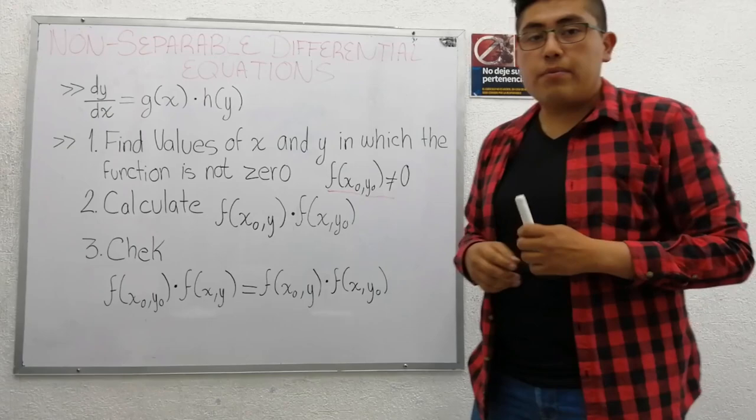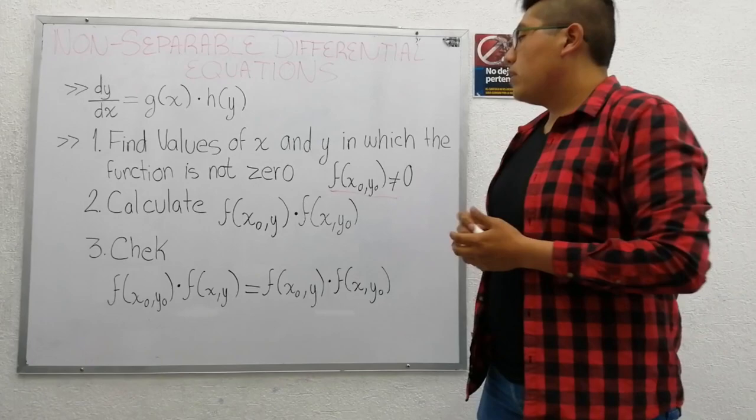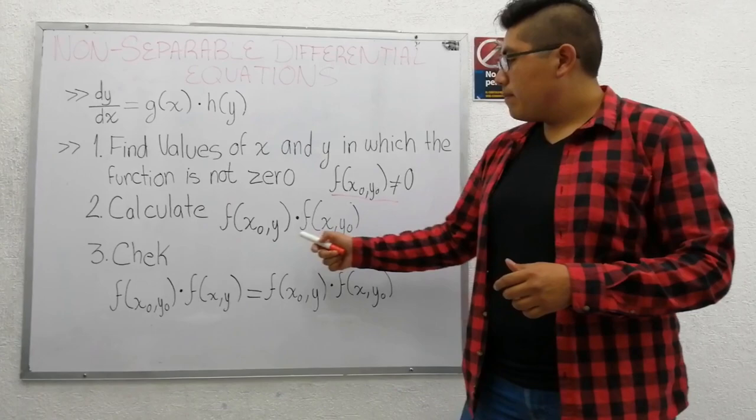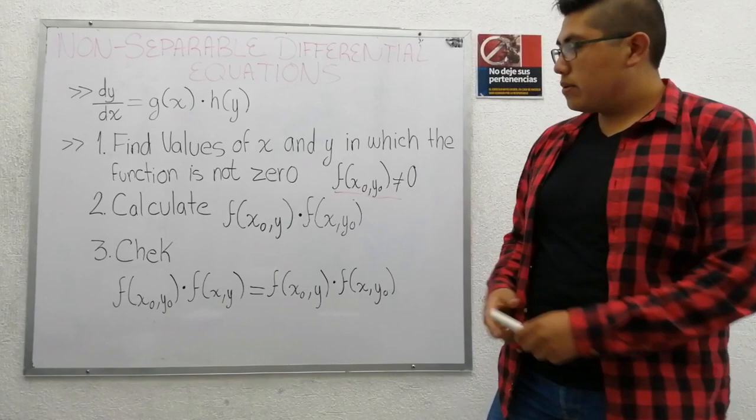To determine if an equation is separable, we perform these three steps. Number one, find values of x and y in which the function is not zero. Number two, calculate a function depending on x sub zero and y times a function depending on x and y sub zero.